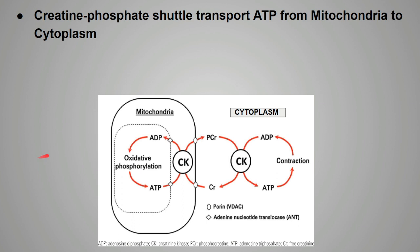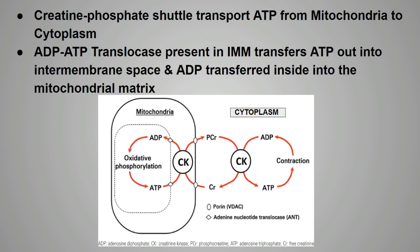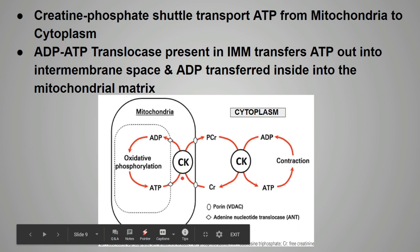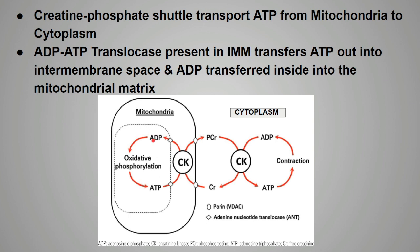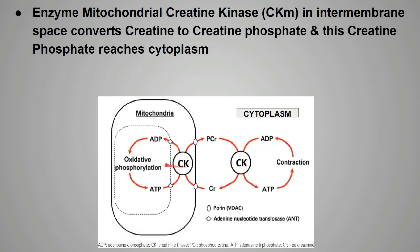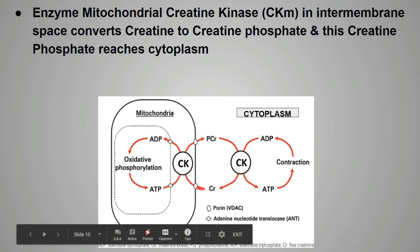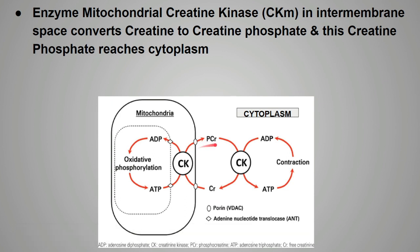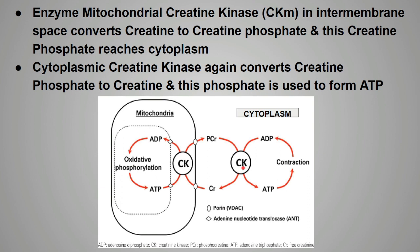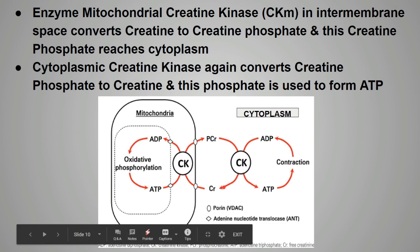The creatine phosphate shuttle transports ATP from the mitochondria to the cytoplasm. The ADP-ATP translocase enzyme in the inner mitochondrial membrane transfers ATP out into the intermembrane space, and ADP is transferred inside into the mitochondrial matrix. The mitochondrial creatine kinase in the intermembrane space converts creatine to creatine phosphate using that ATP. This creatine phosphate reaches the cytoplasm, where cytoplasmic creatine kinase converts creatine phosphate back to creatine, and the phosphate is used to form ATP.